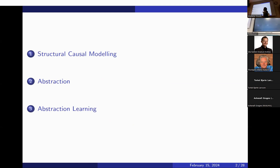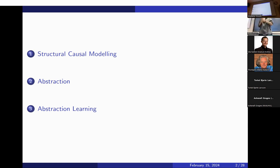I have divided this presentation into three parts. The first two parts are more conceptual or theoretical. We first define what we mean by causal models and go quickly over the definition of structural causal models. Then we introduce the idea of abstraction — relating models to each other — and make it formal and precise. The last part is the most practical and applied: we discuss how we could learn abstractions between causal models and apply this to battery modeling.